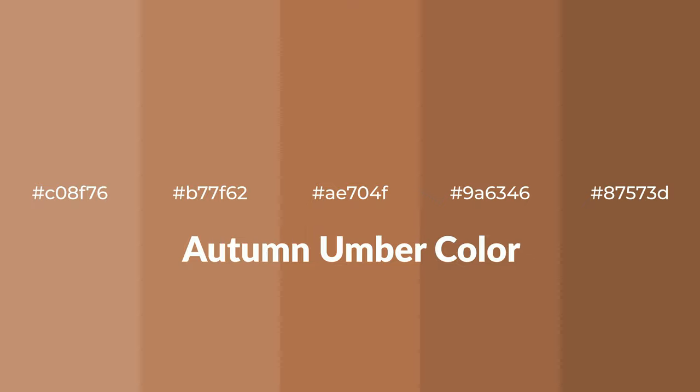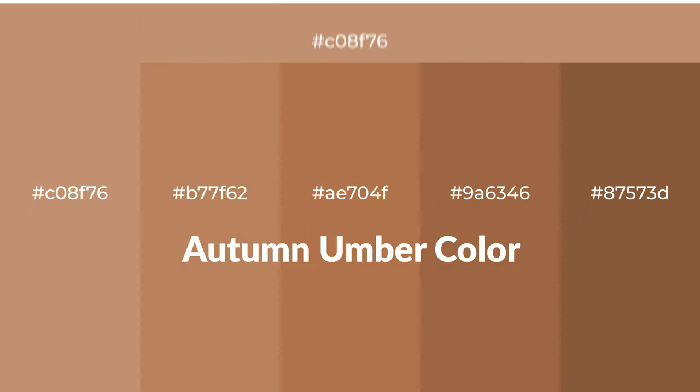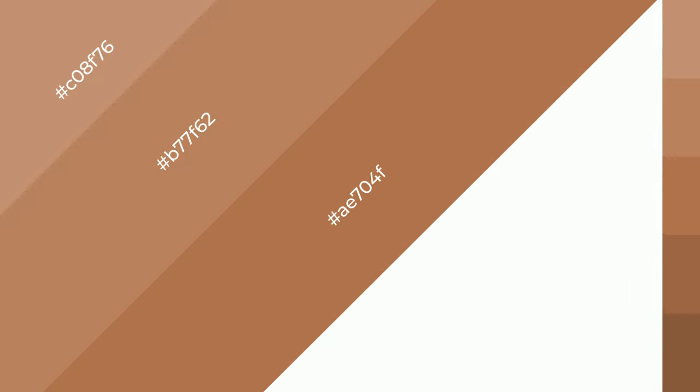Warm shades of autumn umber color with orange hue for your next project. To generate tints of a color, we add white to the color — tints create light and exquisite emotions. To generate shades of a color, we add black to the color, and it is used in patterns, 3D effects, and layers. Shades create depth and drama.